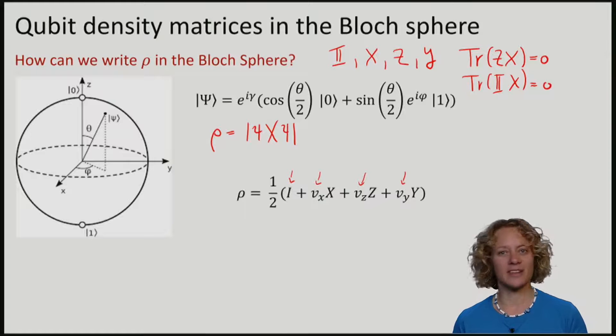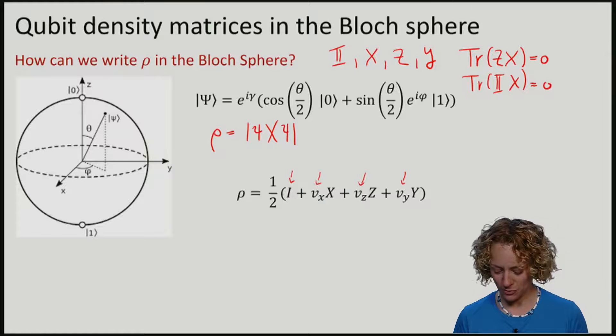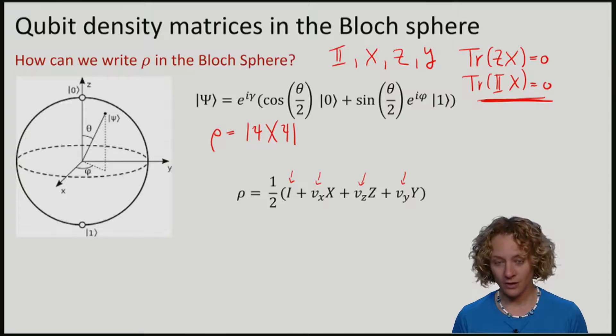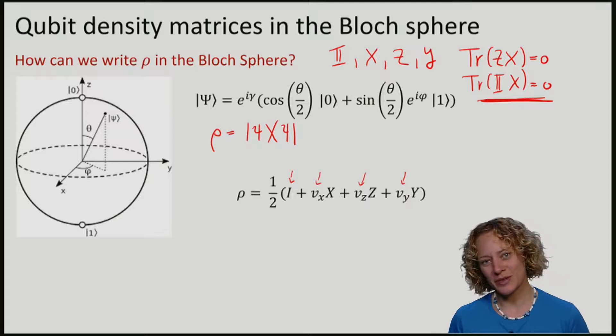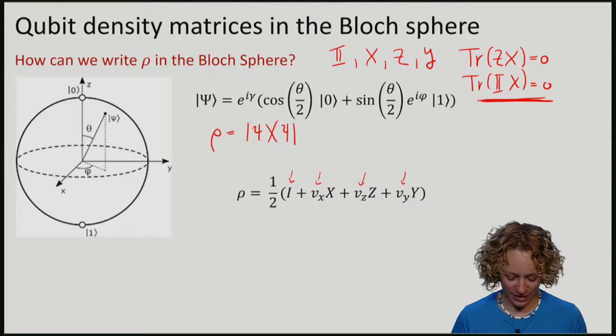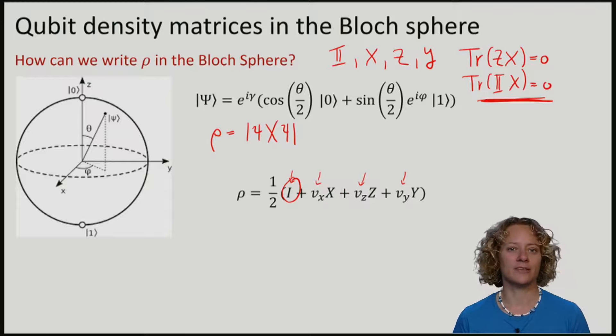Because the Pauli matrices are orthogonal, it also means that the identity times X has trace 0. And because we want that the trace of rho is 1, the coefficient in front of the identity matrix is fixed.